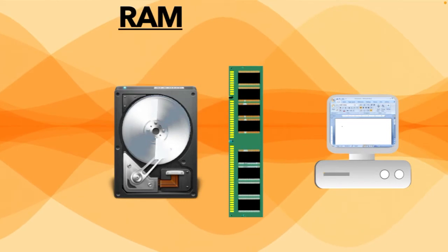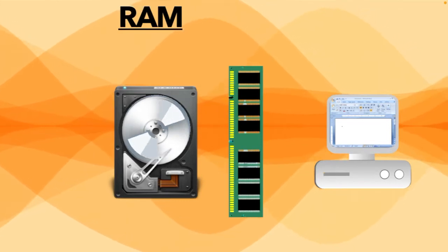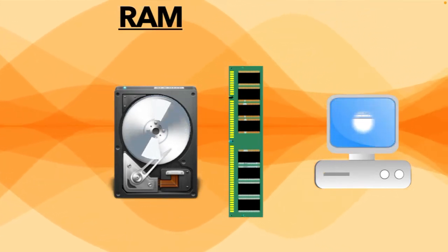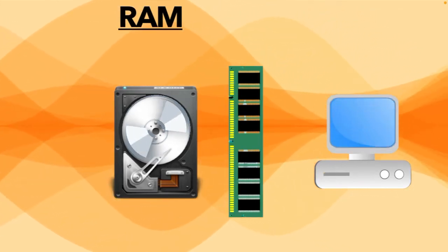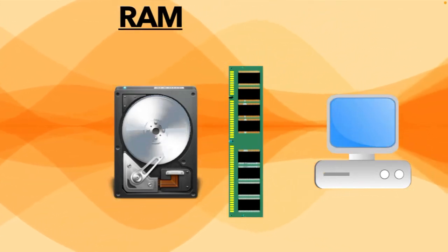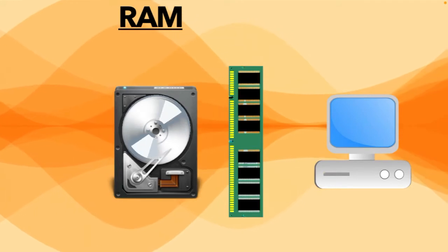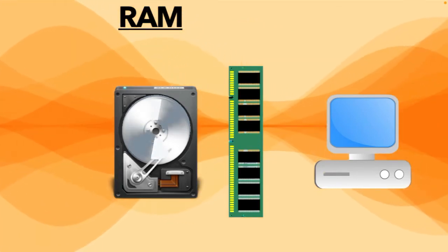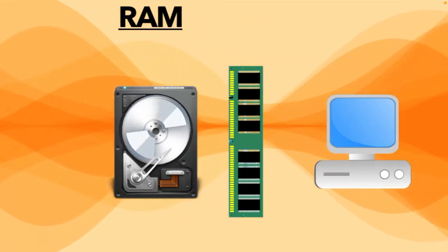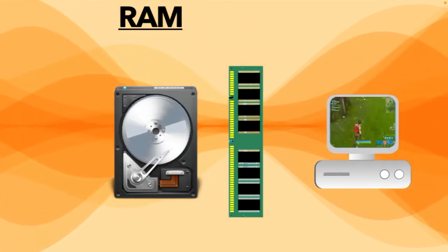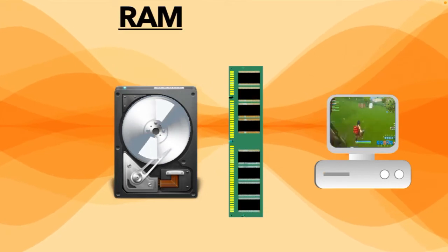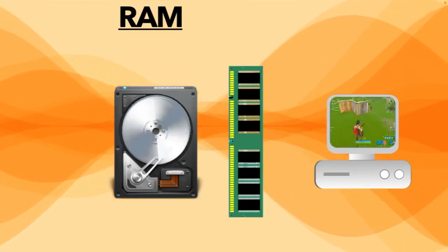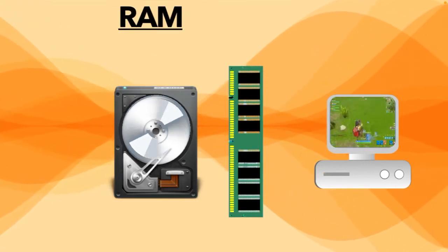And when you are done working with Microsoft Word and close the application, the data still remains in the RAM until you shut down your computer. Let's take another example: when you play a game on your computer, all of the data that your processor needs to play the game goes from the hard drive to the RAM.